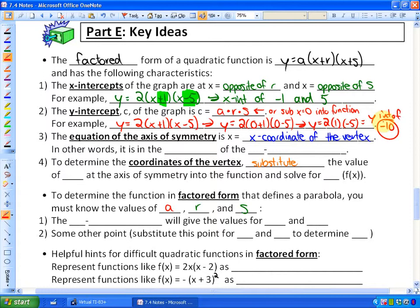A third property is that the equation of the axis of symmetry is x = the x-coordinate of the vertex. In other words, if you look back at your 7.1 notes, the axis of symmetry is in the middle of the x-intercepts. So if you have the x-intercepts, the axis of symmetry will be right in the middle of those.